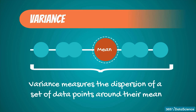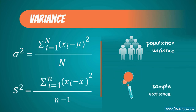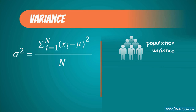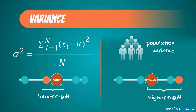Variance measures the dispersion of a set of data points around their mean value. Population variance, denoted by sigma squared, is equal to the sum of squared differences between the observed values and the population mean, divided by the total number of observations. Sample variance, denoted by s squared, is equal to the sum of squared differences between observed sample values and the sample mean, divided by the number of sample observations minus one. The main part of the formula is its numerator — the closer a number to the mean, the lower the result we will obtain, and the further away from the mean it lies, the larger this difference.